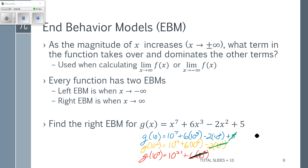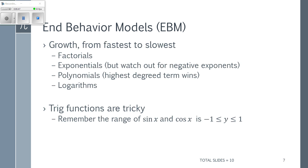What I can say is the end behavior model as X goes to positive infinity — the right end behavior model — is that my function g looks a lot like y = x⁷. Once X gets big enough, if it were possible to graph way out to the right, you would not see a difference between the graph of g(x) and the graph of y = x⁷, because x⁷ gets so big that the other terms are ants compared to the elephant.